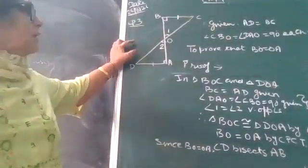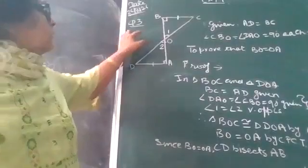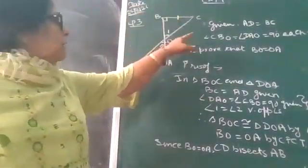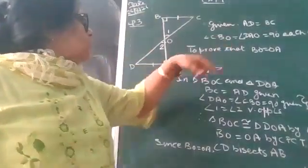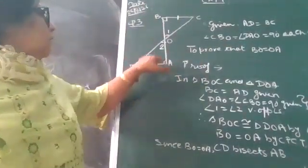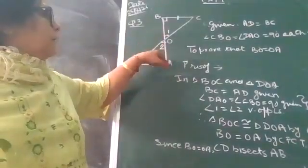Now, here it is given that AD is equal to BC, angle CBO is equal to angle DAO. These two are perpendicular, therefore 90 degrees each angle.